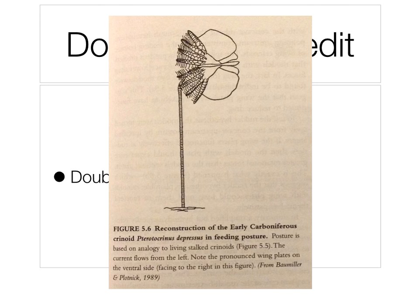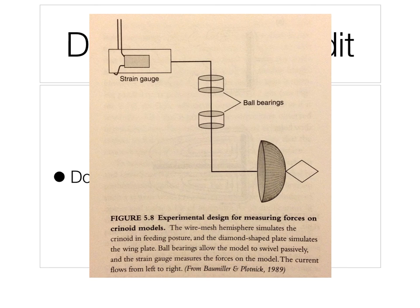One fun example is this early Carboniferous crinoid. It had really interesting wing plates on the ventral side, and people weren't sure what the actual life position or function was. Some scientists went out and made a little model — they put a strain gauge and ball bearings together, then made a wire mesh hemisphere that simulates the crinoid in its feeding position, and a diamond-shaped plate to simulate the wing plate. The ball bearings allow it to swing passively in a current, and they moved it in a tank where the water flowed from left to right.